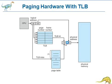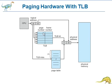On a TLB hit, the frame number is obtained and mapped with the offset d, giving us the physical address in physical memory. On a TLB miss, a memory reference to the page table must be made. When the frame number is obtained, we can use it to access memory. In addition, we add the page number and frame number to the TLB so that they will be found quickly on the next reference.